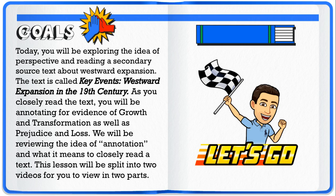Today, you will be exploring the idea of perspective and reading a secondary source text about westward expansion. The text is called Key Events: Westward Expansion in the 19th Century. As you closely read the text, you will be annotating for evidence of growth and transformation as well as prejudice and loss. We will be reviewing the idea of annotation and what it means to closely read a text. This lesson will be split into two videos for you to view in two parts. So let's get started.